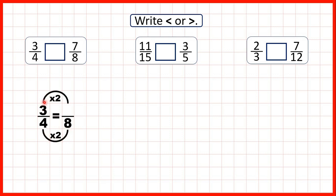What we do to the denominator we need to do to the numerator as well, and three times two is six. So because we know that three quarters is equivalent to six eighths, we know that it must be less than seven eighths.